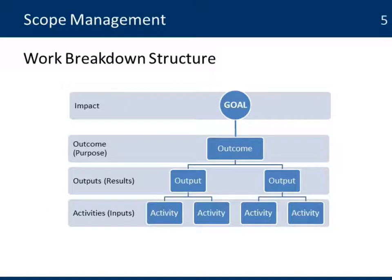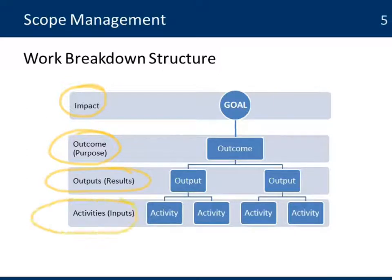In this example, we can see that the goal of the project, which is at the level of impact, can be broken down into a second level, which are the outcomes or the purpose of the project, and then you can break it down into the different outputs or results. And finally, at the lower level we have all the activities.